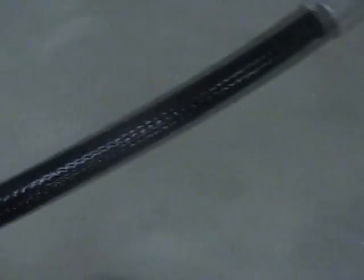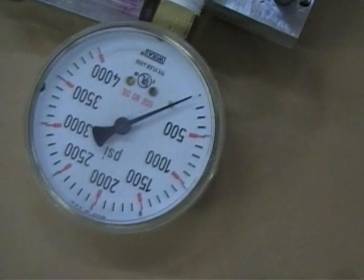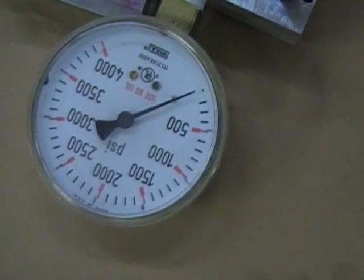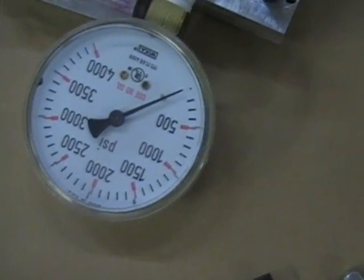So the line coming out of the hand pump is going over to this manifold block, coming into the top of the manifold block, and then I've got a pressure gauge here on the manifold block. It goes up to 4,000. Like I said, we're not going to be going up anywhere near that.